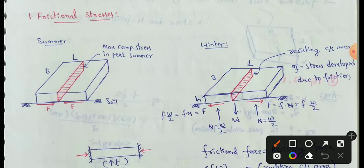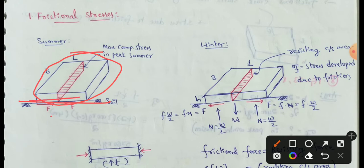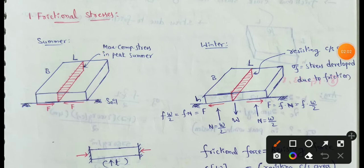Frictional Stresses are induced in the bottom fiber due to contact with soil. This is the soil base, and it is a rigid pavement. Frictional stresses act at that contact interface.